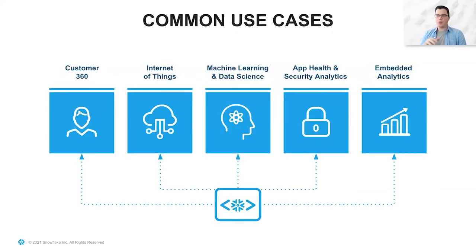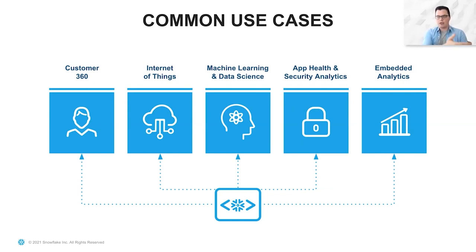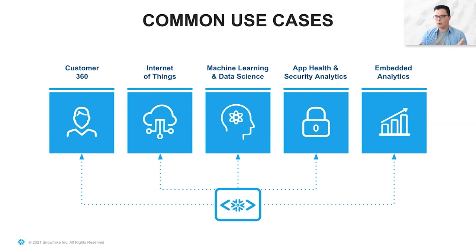Some of the most common use cases we see people and companies building data apps on Snowflake for — one is Customer 360. The idea that the more you know about your customer, the better you can either build the service for them, or provide a recommendation engine to know they're more likely to watch this type of movie or purchase this item. Next is really the internet of things — every single device connected to the internet — using that data to perform anomaly detection on an engine. If you can know when an engine is about to stop working, that's a lot better than waiting for it to actually stop and then address the downtime.